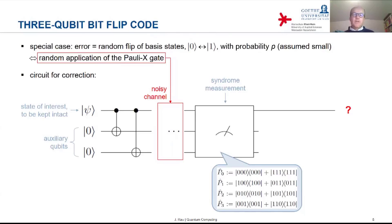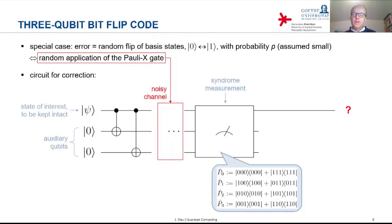Such a measurement is called a syndrome measurement, and it measures the so-called error syndrome — the type of error that occurred: whether there was no disturbance at all, or a disturbance on which of the three qubits.